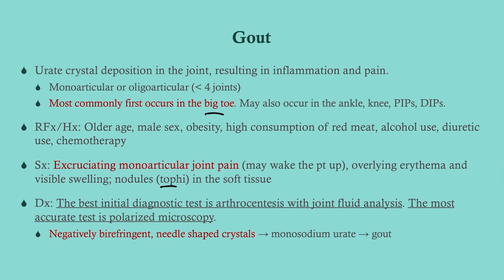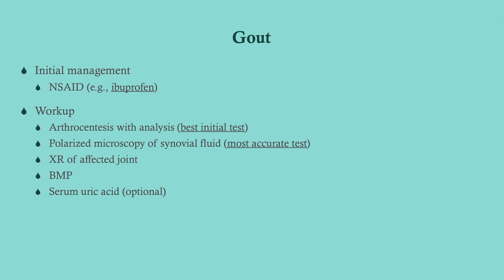The best initial diagnostic test is an arthrocentesis with joint fluid analysis, which helps differentiate gout from septic arthritis — very important. With septic arthritis you'd expect fever, high white count, and so on; with gout, not so much. The most accurate test is polarized microscopy of the synovial fluid. Order both at the same time. With gout you expect negatively birefringent, needle-shaped crystals from monosodium urate.